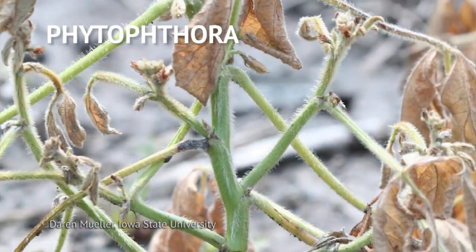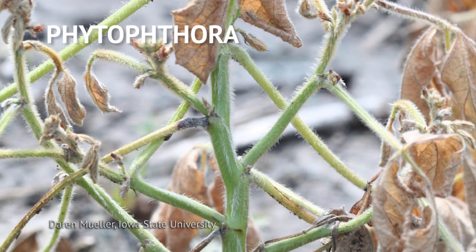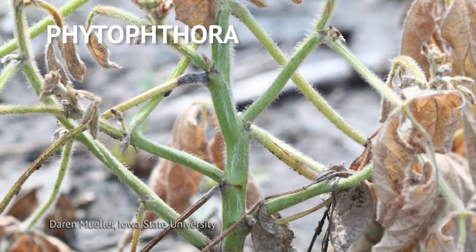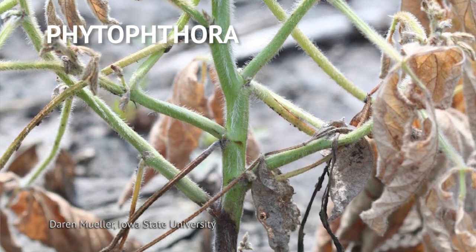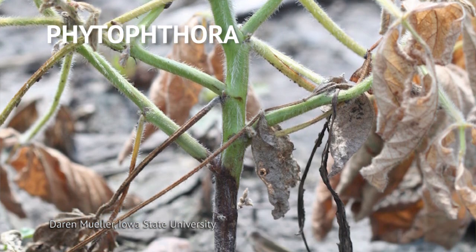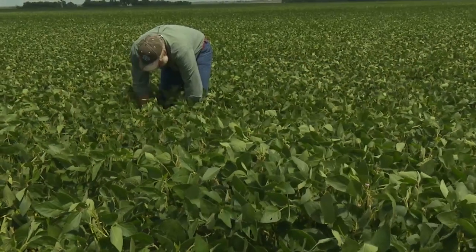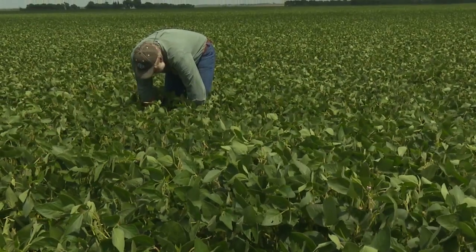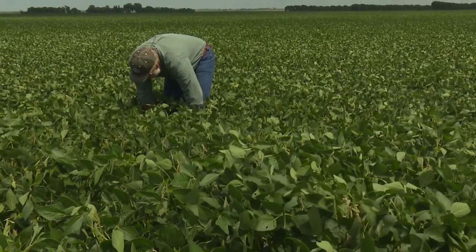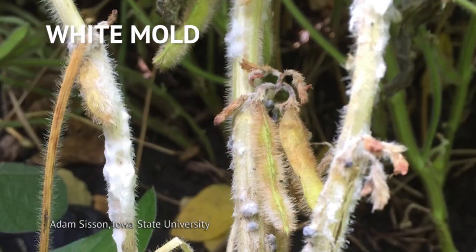One category is diseases that cause death so fast that the leaves will actually stay attached to the plant. Phytophthora might be an example — it's killing the plant so quickly that you have dead leaves attached to it. As you go into that patch, you start looking for signs or symptoms of the disease that might help distinguish it.